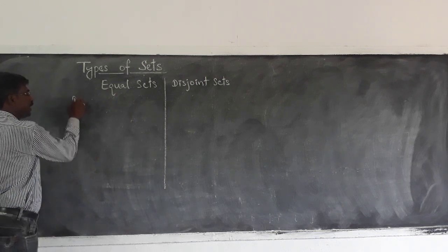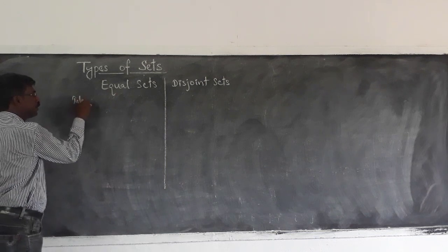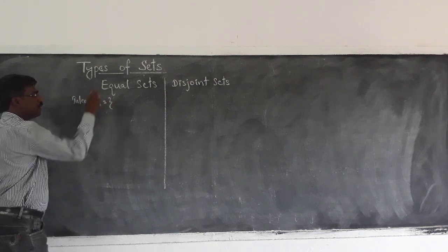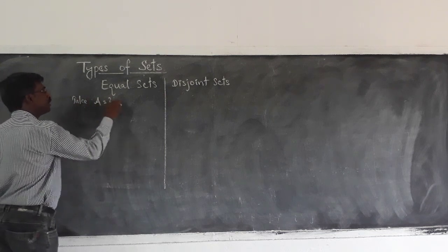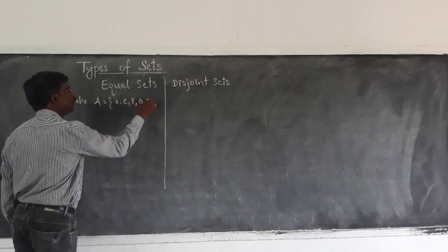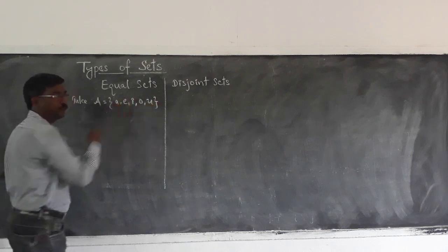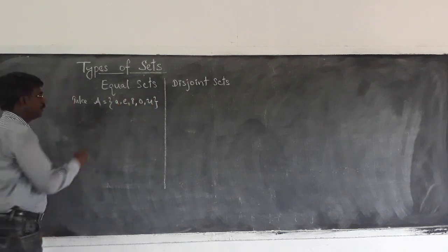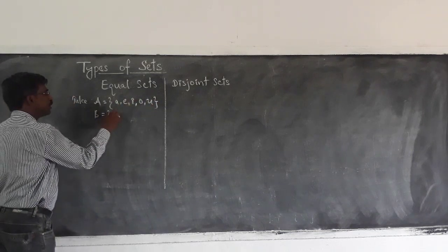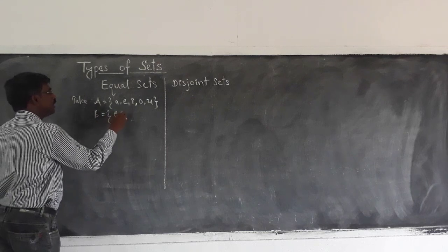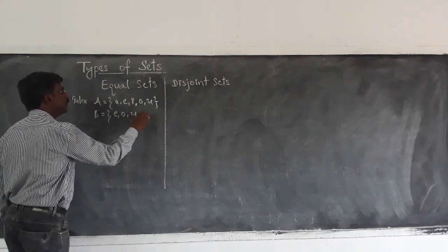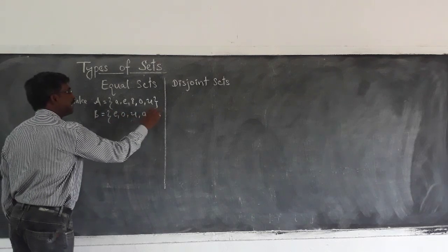Take A equal to the set of {A, E, I, O, U}. Now B equal to the set of {E, O, U, A, I}.